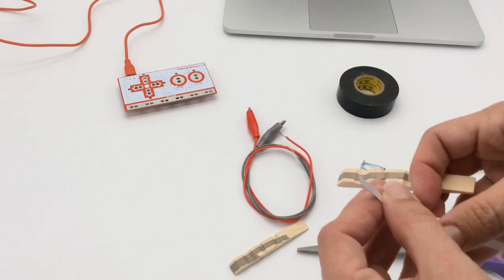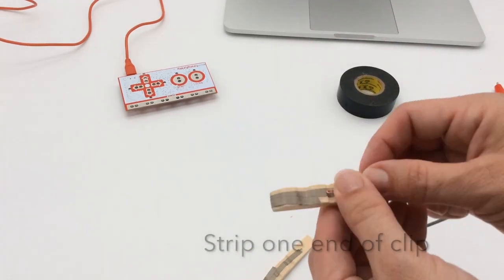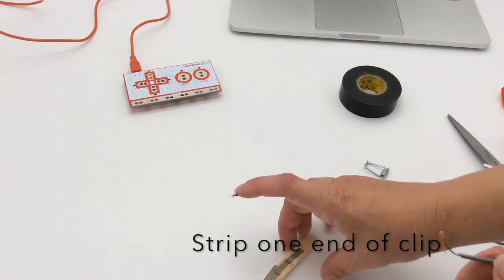Then you're going to clip an alligator clip, cut the head off, and expose the wire.